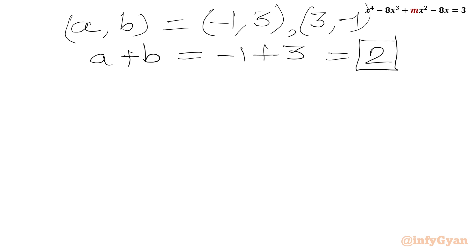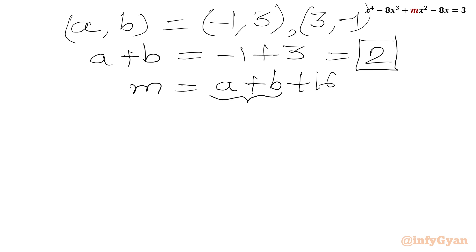Now we can write our M equation. M was A plus B plus 16. Substituting A plus B equals 2: M equals 2 plus 16. So the value of M is 18.